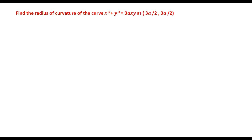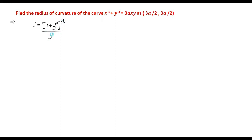In this video, we will discuss the radius of curvature in Cartesian form. Let us take one example: find the radius of curvature of the curve x³ + y³ = 3axy at the point (3a/2, 3a/2). The radius of curvature in Cartesian form is given by ρ = (1 + y'²)^(3/2) / y''.